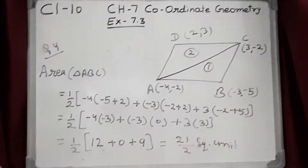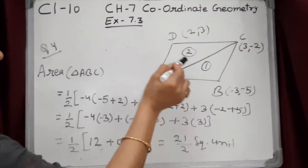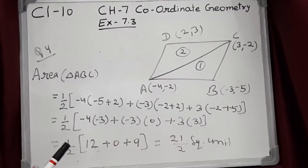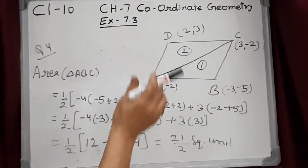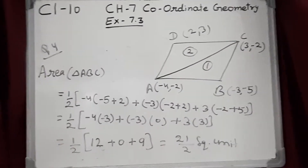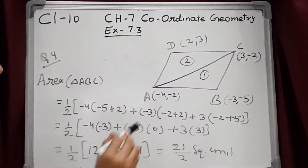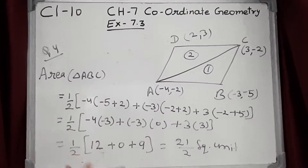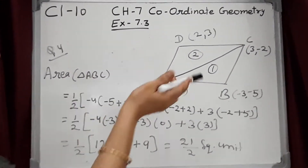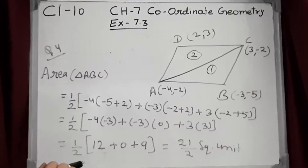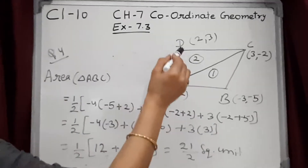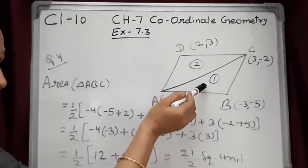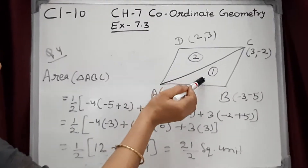Now I have to use the triangle area formula. I know that I have to find the area of the quadrilateral. So I use the method where I divide this quadrilateral into two parts — when the quadrilateral is divided, two triangles are formed. So the area of the quadrilateral equals the sum of one triangle and a second triangle.